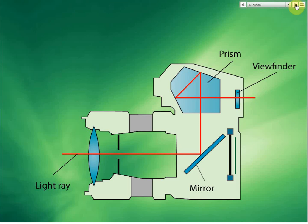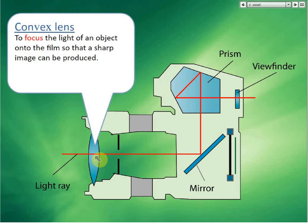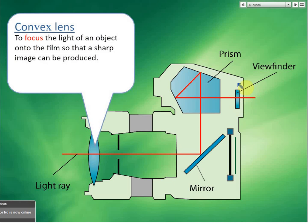Let's start with the lens — the convex lens. The convex lens is used to focus the light of an object onto the film. The film is here. The light goes to the mirror and then up to the viewfinder, which is what you see. So this convex lens focuses the light on the film.